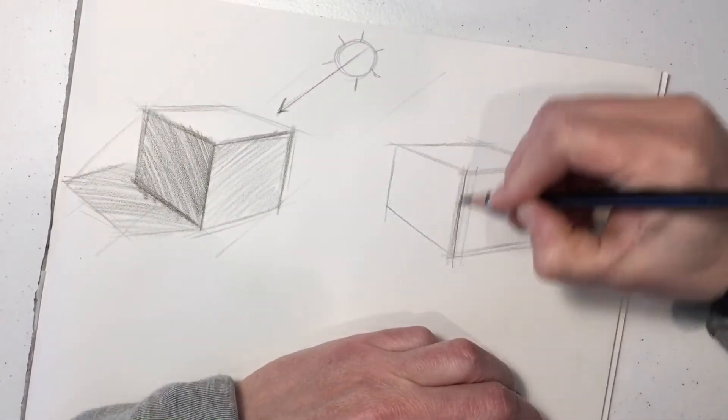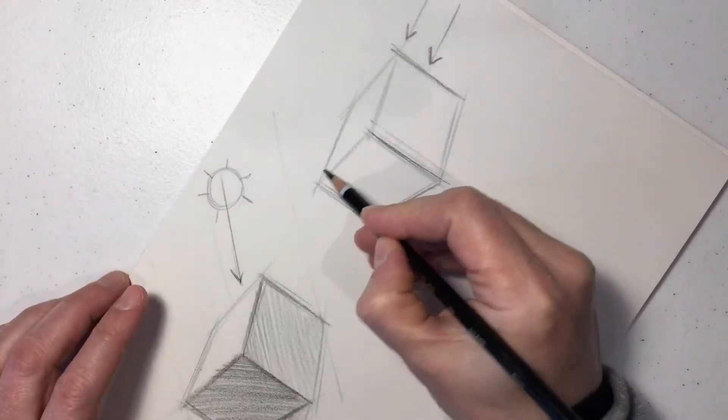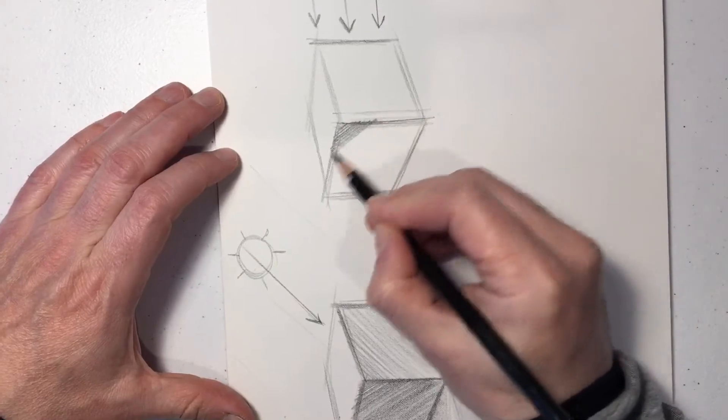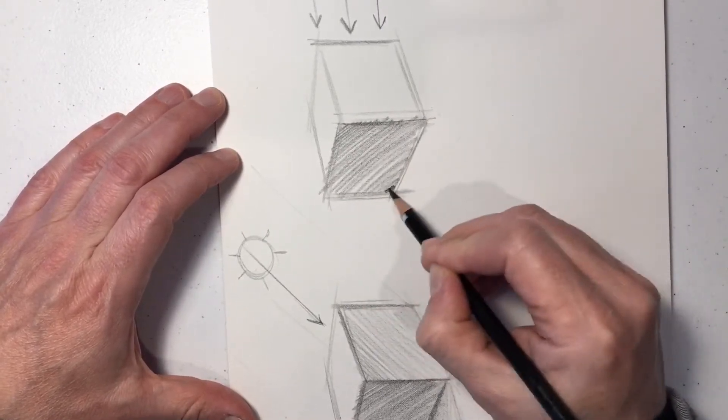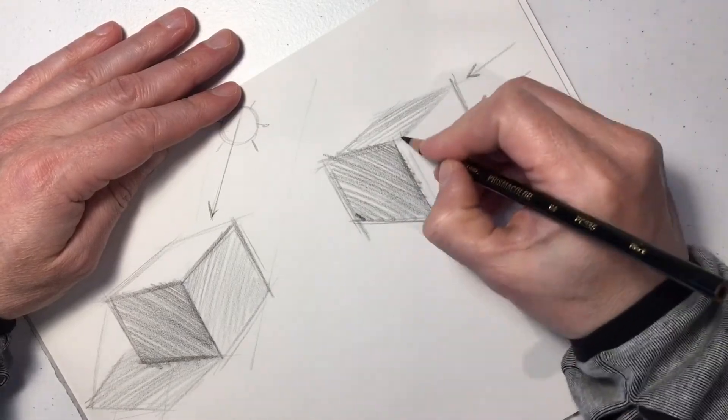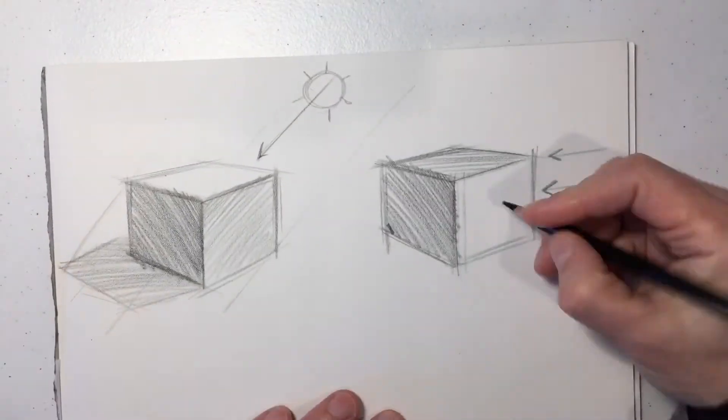Here, we'll sketch another cube with a different light source. Perhaps the light source is coming in more from the side, like a sunset. Again, the side facing most away from the sun will be the darkest. But the top surface will become our secondary shadow area.